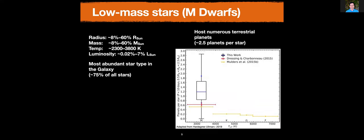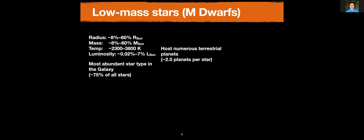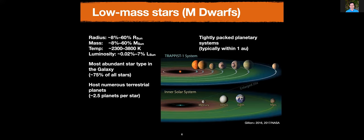We know that M dwarfs host a lot of terrestrial planets from all of the work done by the Kepler Space Telescope. Here is a plot from a collaborator, Kevin Hardigree-Allman, showing temperature binned by spectral type — decreasing stellar mass as you move to the left. The M dwarfs are all the way on the left, and you can see an increase in the number of terrestrial-sized short-period planets these stars host. Studies have shown that on average, 2.5 planets per star orbit these small stars — things that are Earth or Mars sized.